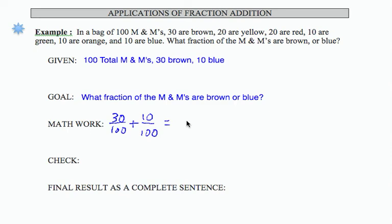If we use our fraction addition rules, we have common denominator. So that means I have 30 plus 10 or 40 out of 100 that are brown or blue.